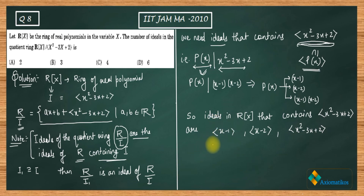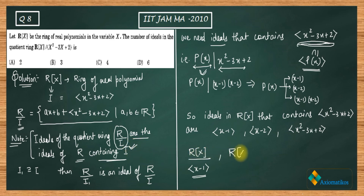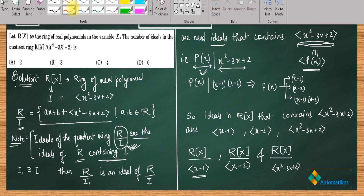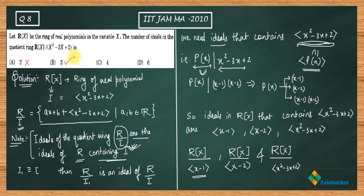So there are exactly three ideals inside the quotient ring R/I. They are R[x]/⟨x - 1⟩, R[x]/⟨x - 2⟩, and R[x]/⟨x² - 3x + 2⟩ itself. Therefore, option A is incorrect, B is correct, C is incorrect, and D is incorrect. This is how we proceed with this question. Thank you.